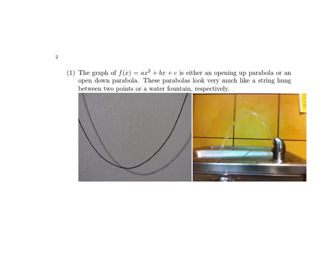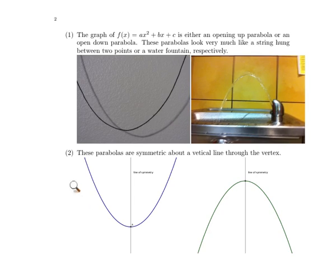To explain why that formula works for finding the vertex, we need to observe some properties about quadratic functions. The graph of a quadratic function is a parabola. We have a mental image that it either looks like a string hung between two points or like a water fountain. Parabolas are very symmetrical. If a vertical line is drawn through the vertex of either an opening up or opening down parabola, then the parabola is symmetric about that line.